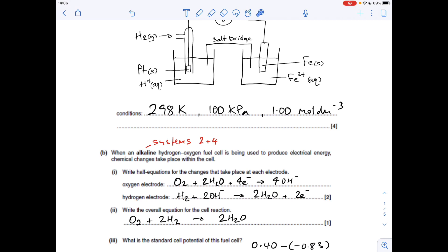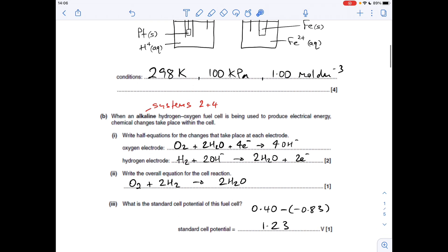The overall equation, all we need to do is multiply this half equation by two so that those electrons will go up to four. So when we combine the two half equations, the electrons will disappear. The standard cell potential of the fuel cell, it's the most positive standard electrode potential minus the least. And that comes out at 1.23 volts.